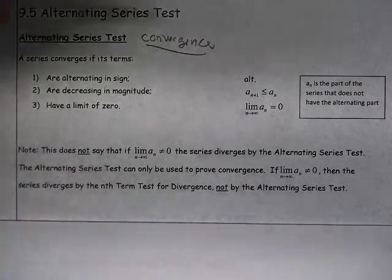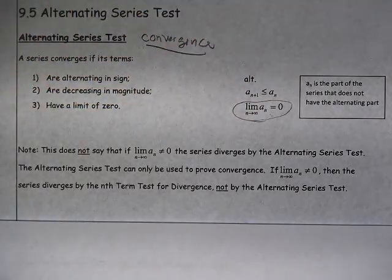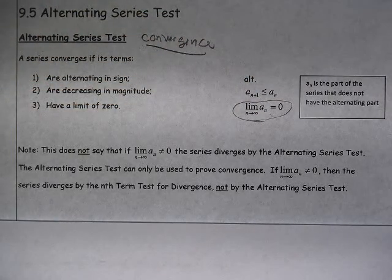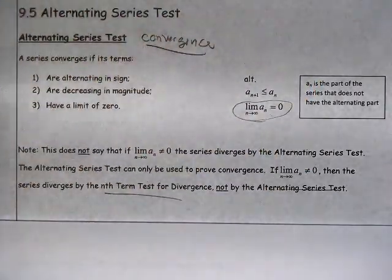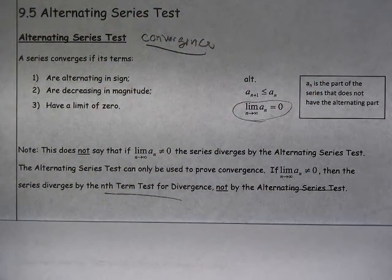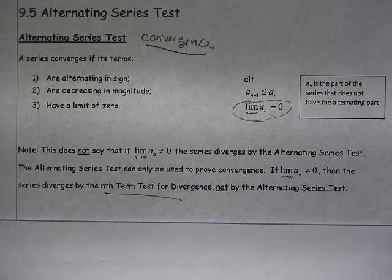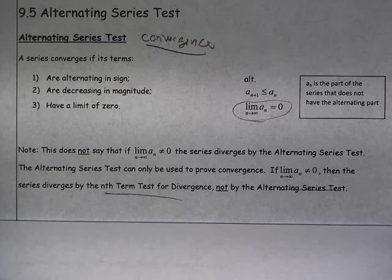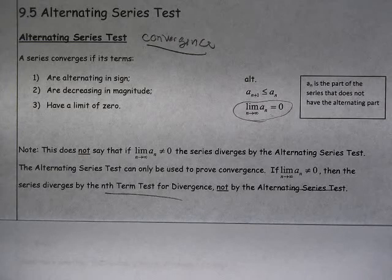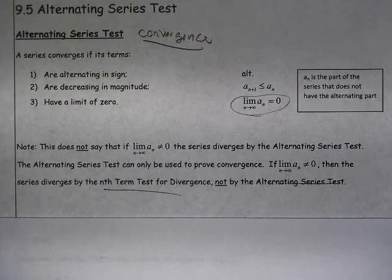If we find a series which doesn't meet this condition, then it diverges not by the alternating series test, but by the nth term test for divergence. So it may seem like a minor point, but it's important in terms of justifying your answers in the proper way. The alternating series test is never used to prove divergence. It's only used to prove convergence.